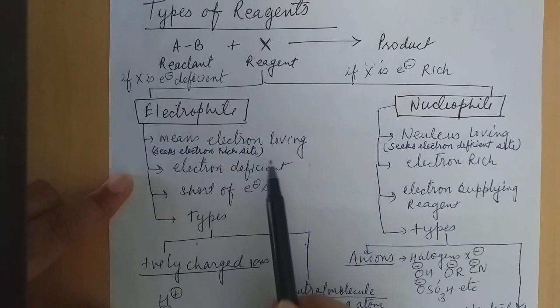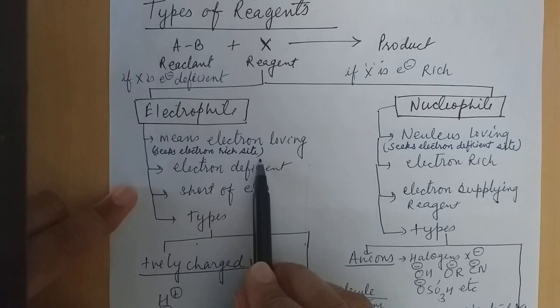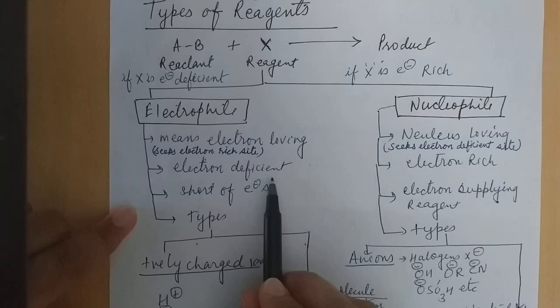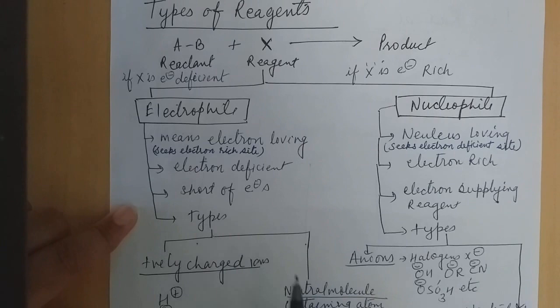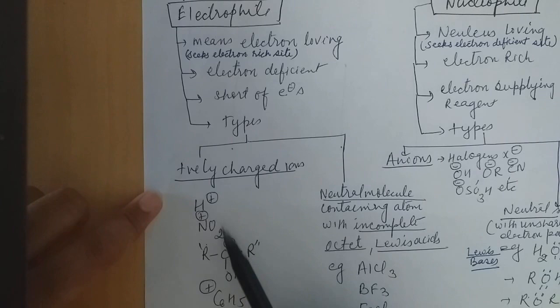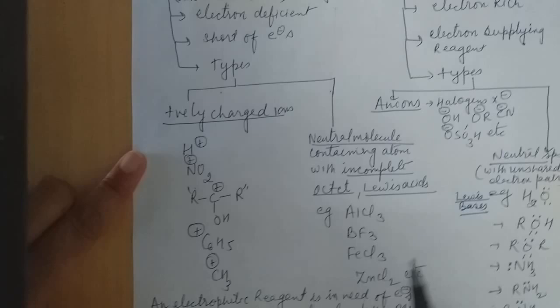First, we are doing about electrophile. Electrophile means electron loving. They seek the electron rich side. They are electron deficient — short in electrons. They are either positively charged or maybe neutral. These are all species which possess positive charge, and they are electron deficient species.